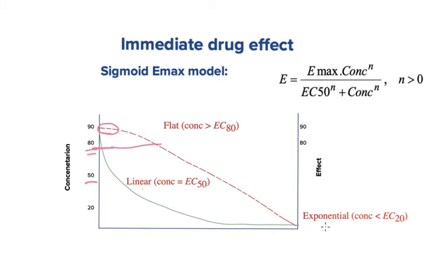The last region is the exponential region. This region is when the concentration of the drug is below EC20. You can see the concentration of the drug achieves very low or almost negligible levels, but the effect is still decreasing and still present. The shape of the two curves at this region shows an exponential shape. At this region the effect is said to be directly proportional to the concentration.